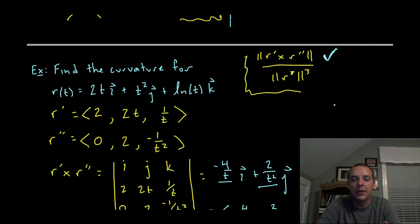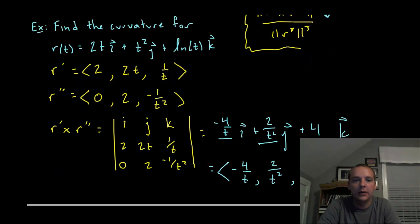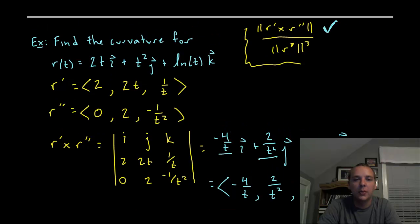Here's r prime. The norm of r prime would be 4 plus 4t squared plus 1 over t squared and the square root of all that.